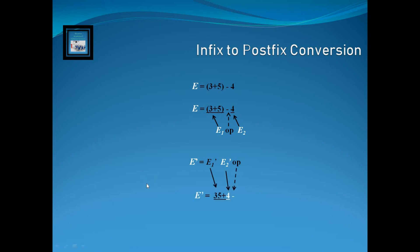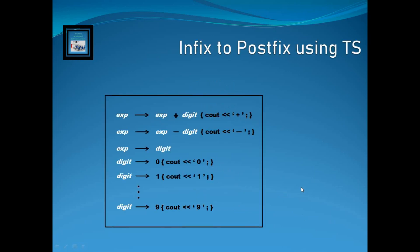Applying this rule, the postfix form of the main expression E' is: the postfix of (3+5) which is '3 5 +', then the postfix of 4 which is '4', then the minus operator — giving '3 5 + 4 -'. If you want to convert such infix expressions into postfix form using a translation scheme, the scheme will look like a grammar with embedded semantic actions.